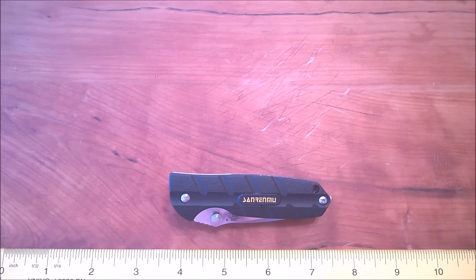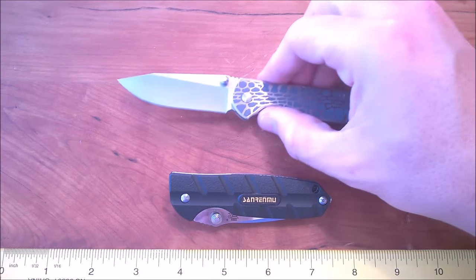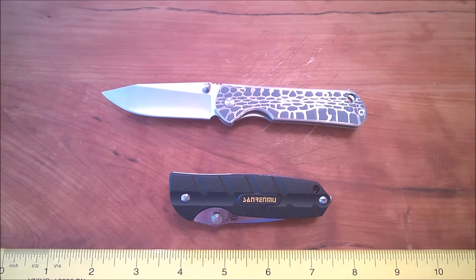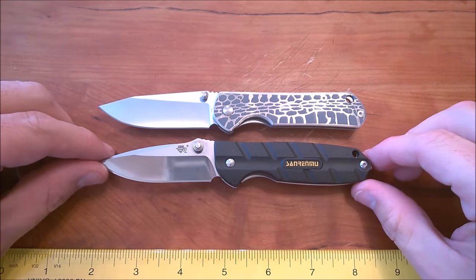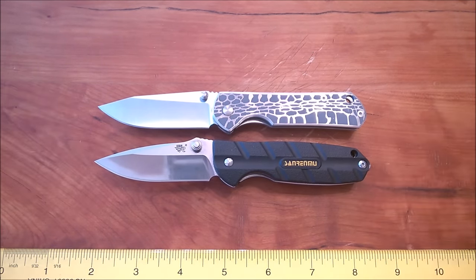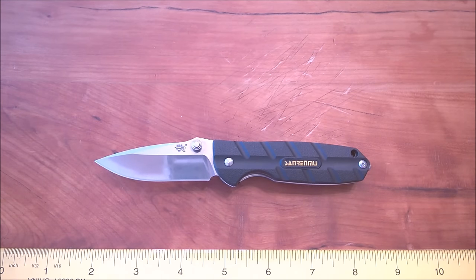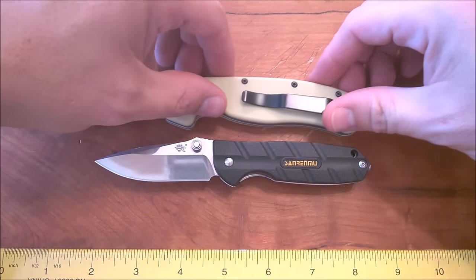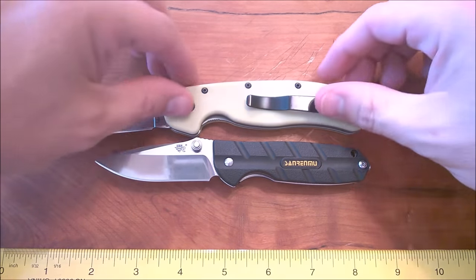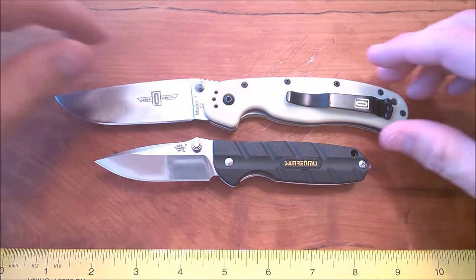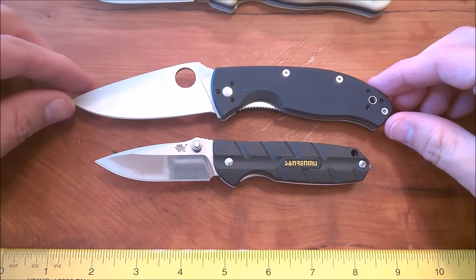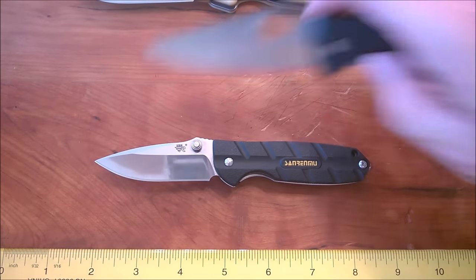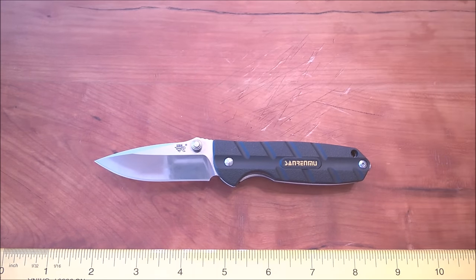We'll begin by doing some size comparisons. If you are familiar with San Renmu, you're probably familiar with the 7010, formerly known as the 710, probably the most popular San Renmu knife. I'm lining up the pivots as well as I can, and you can see the two knives are very similar in size. If you've got an Ontario Rat 1, we'll line it up at the back here. That's quite a bit bigger. Or perhaps you own a Spyderco Tenacious, and it looks something like that compared to the San Renmu 7092 that we're looking at today.